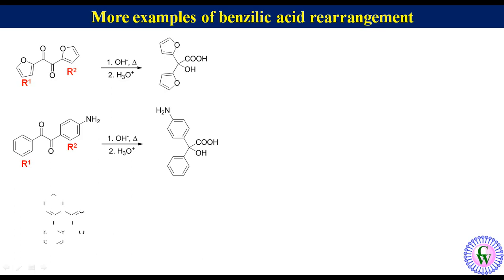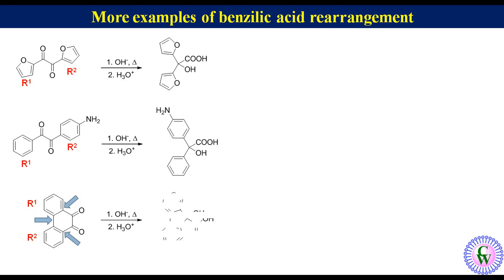2,5-phenanthrene-quinone. This can be treated as a benzyl in which the two aryl groups are connected through a single bond. Thus, in the product formed after benzylic acid rearrangement, these two residues will be attached to a carbon having a hydroxyl group and a carboxylic group.